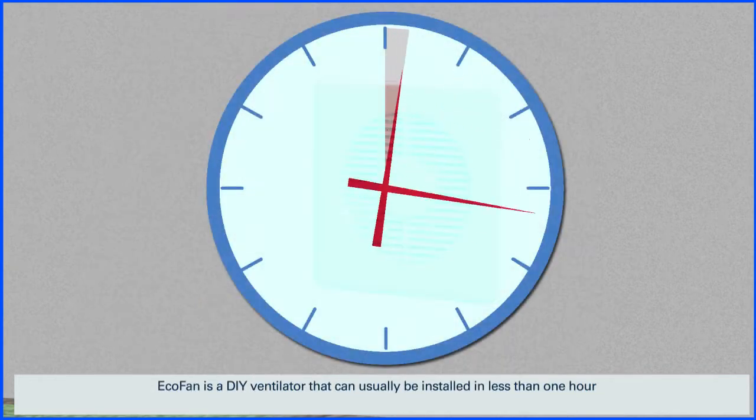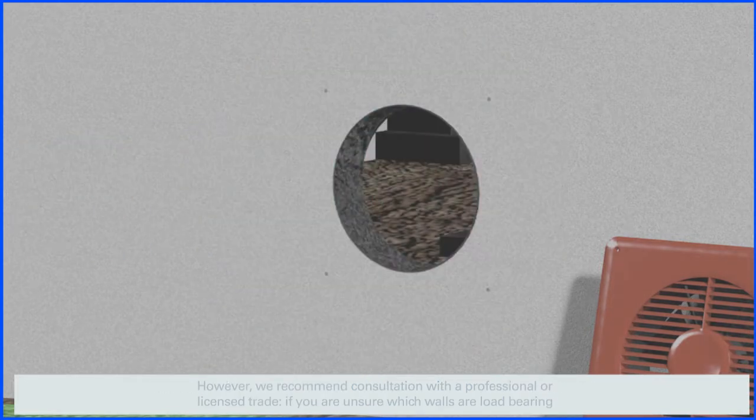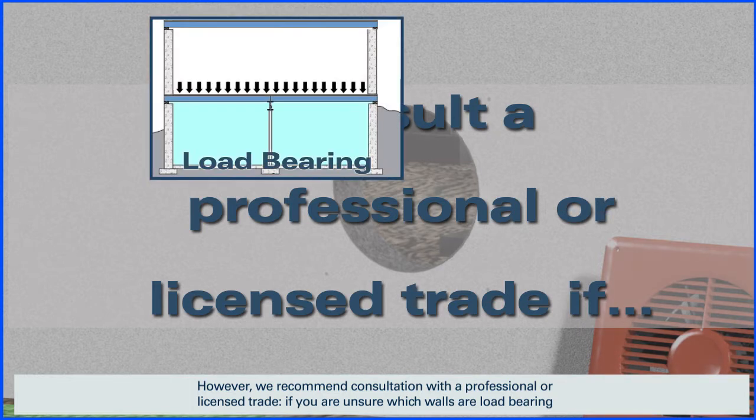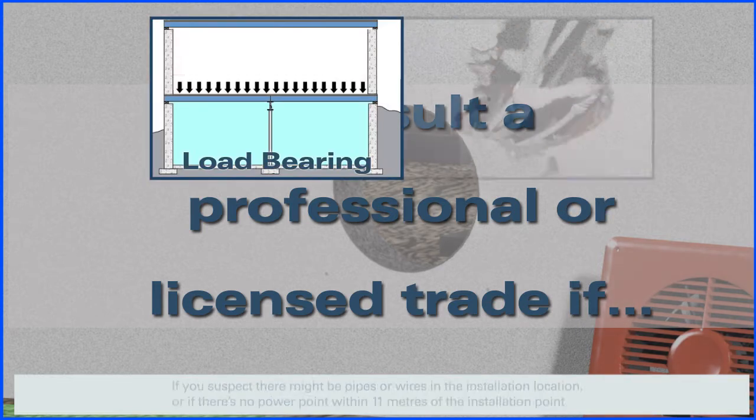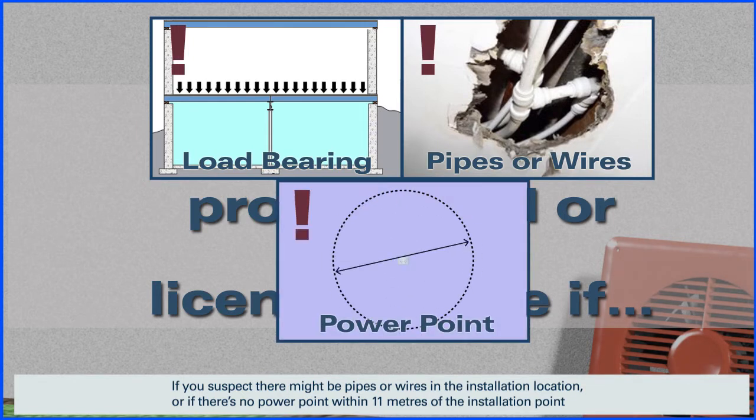ECOFAN is a DIY ventilator that can usually be installed in less than one hour, however we recommend consultation with a professional or licensed trade if you're unsure which walls are load-bearing, if you suspect there might be pipes or wires in the installation location, or if there's no power point within 11 meters of the installation point.